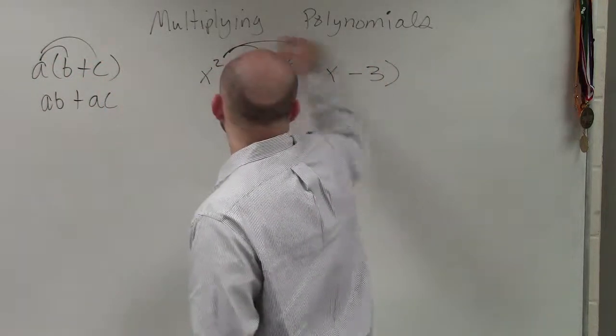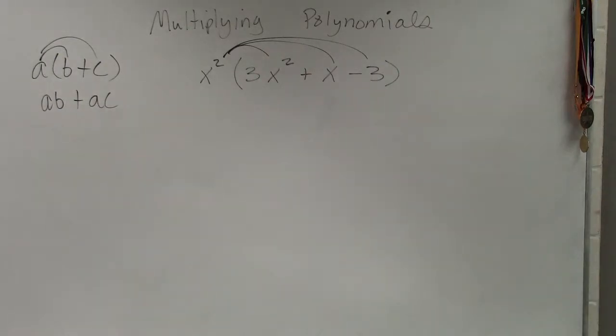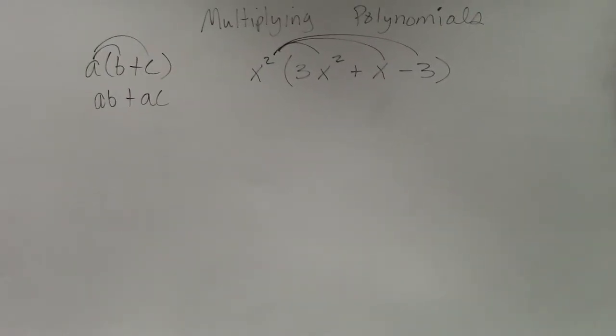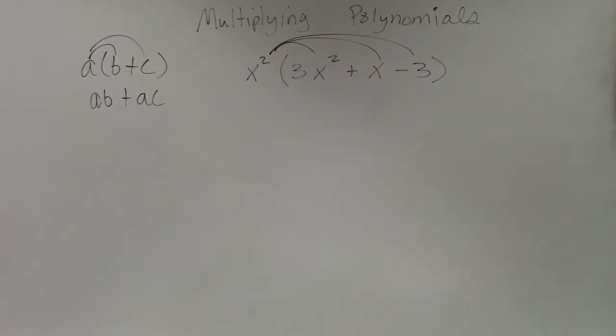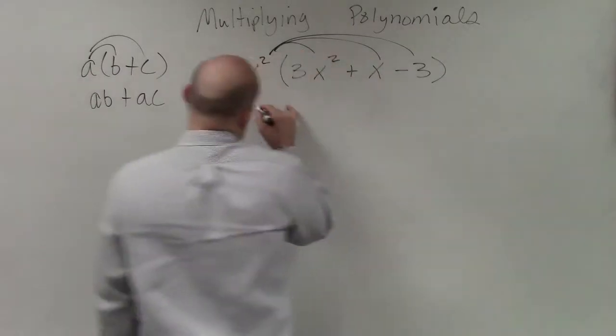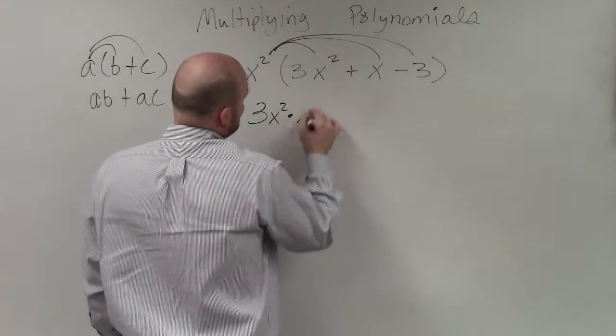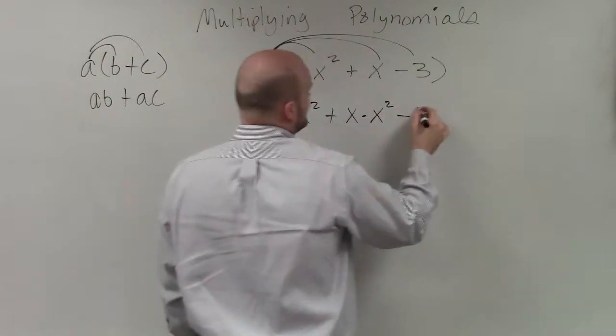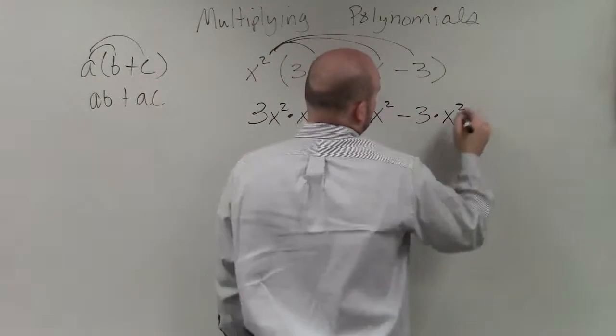what I'm doing is I'm going to multiply x squared times all three of those terms. So when doing that, I'm saying 3x squared times x squared plus x times x squared minus 3 times x squared.